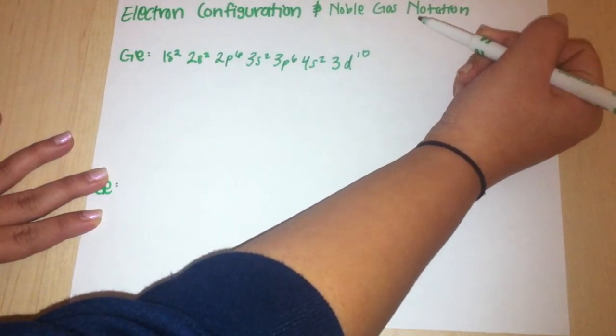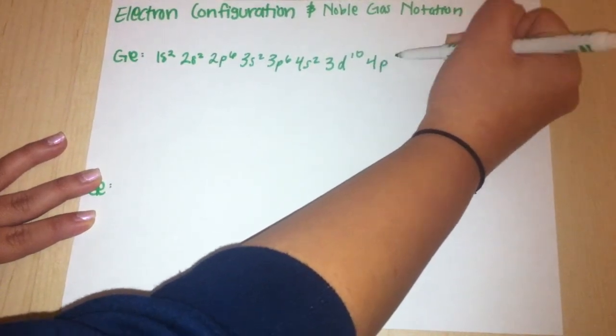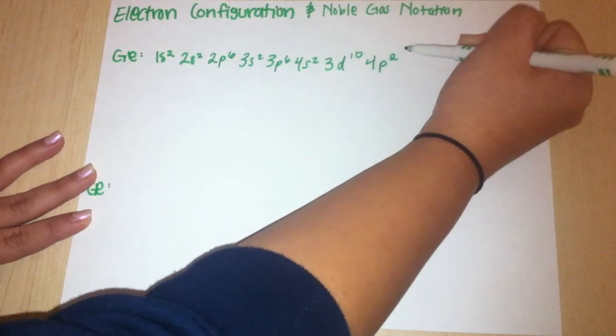Germanium is the second one on the fourth level of the P block. So you would write a 4 for the level, a P for the block, and 2 for the element number that germanium is in.